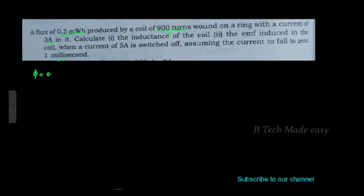Given: flux φ is equal to 0.5 milliweber, that is 0.5 into 10 raise to minus 3 weber. Number of turns N is equal to 900. Current is equal to 3 ampere.